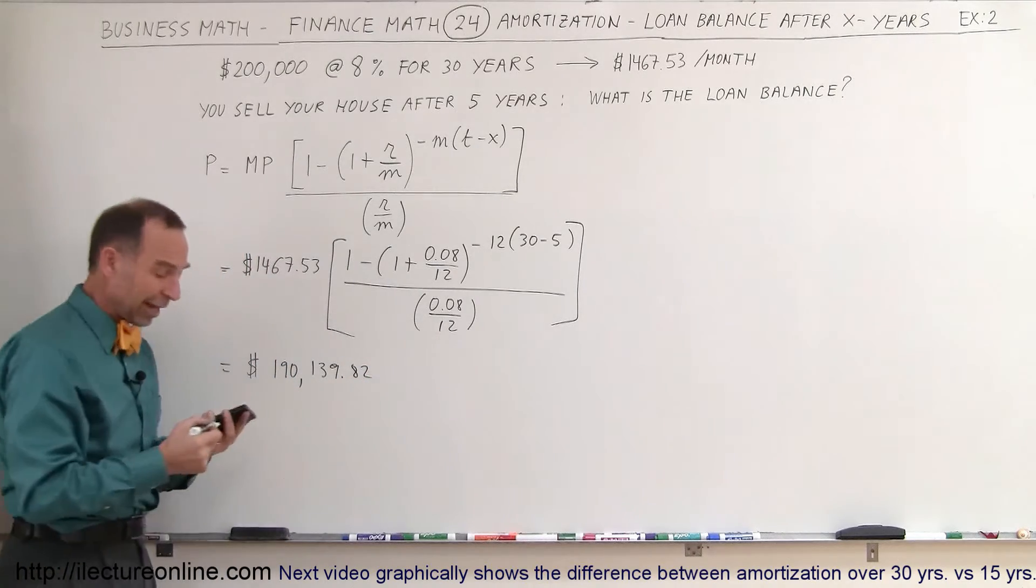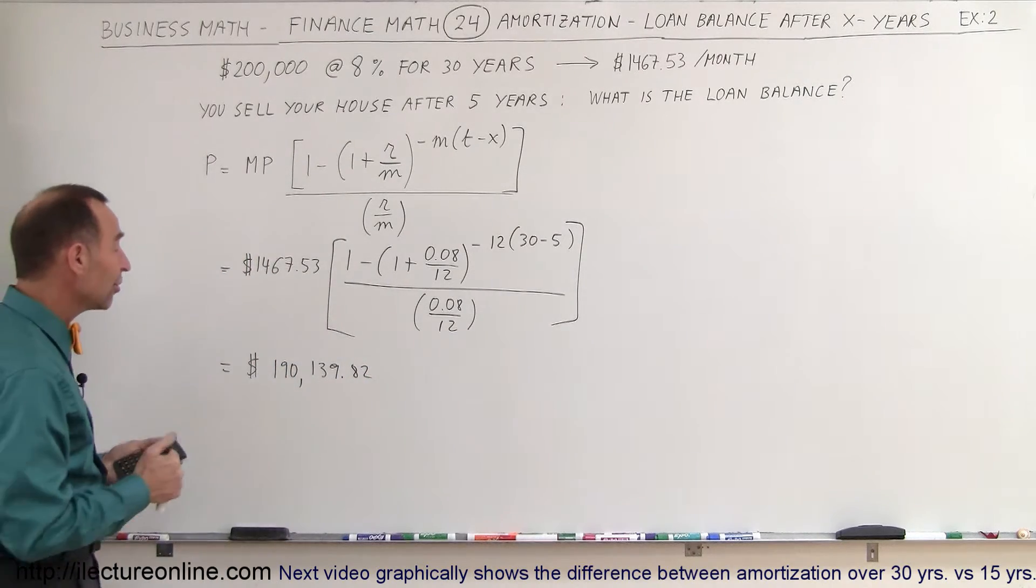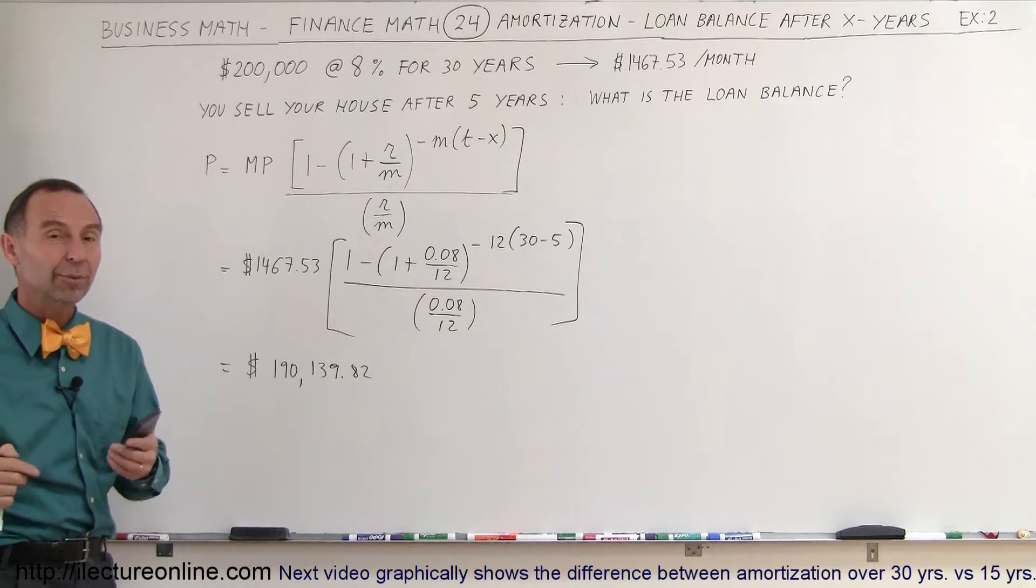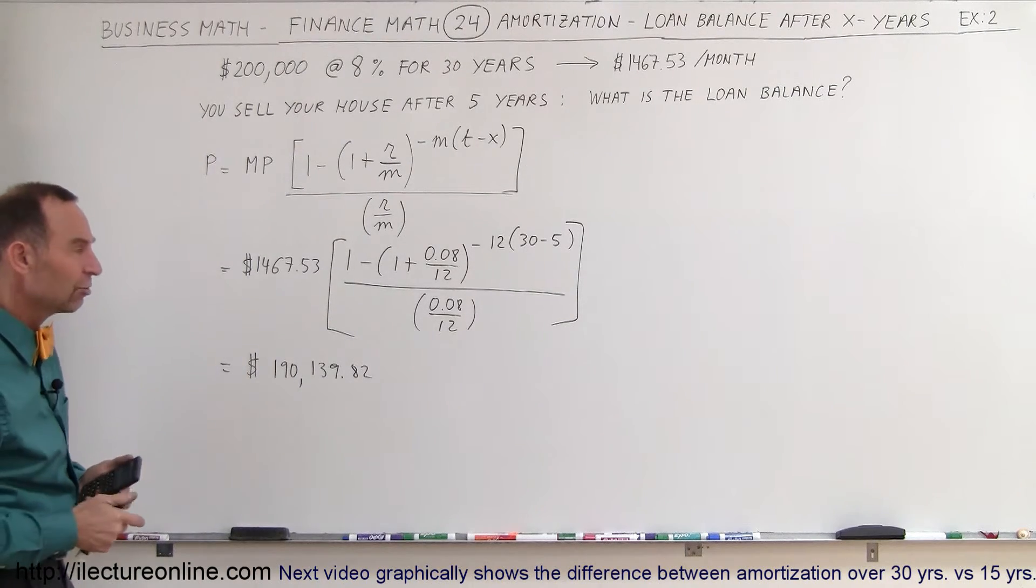Which means at that point, after five years of payments, you have paid less than $10,000 in principal. And everything else you paid to the bank was interest.